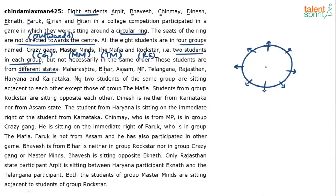Now, an interesting point: no two students of the same group are sitting adjacent to each other except those of The Mafia. So except The Mafia group, all other groups are separated — only The Mafia students sit together. Also, students from the group Rockstar are sitting opposite to each other.